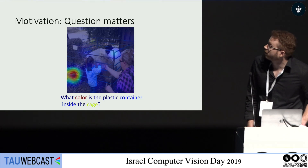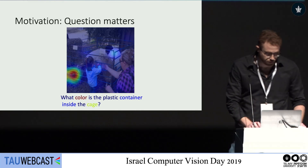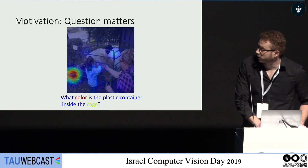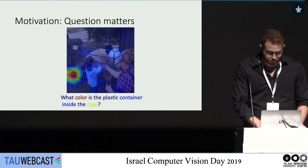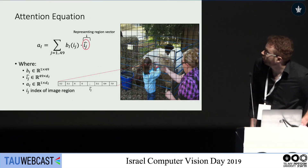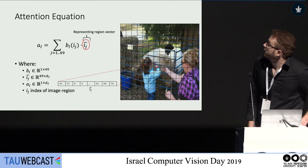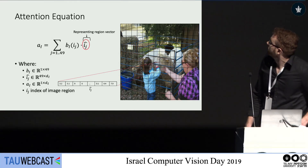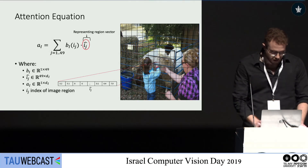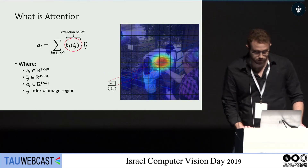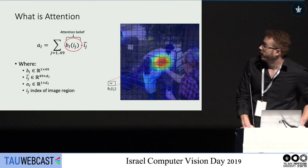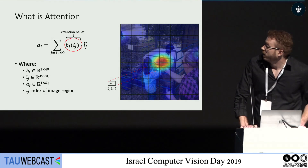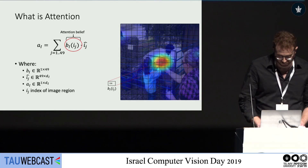Another motivation is the fact that the question matters. When we change the question, we want the attention over the image to change. So when the question is 'what color is the plastic container?', we want the attention to look at the plastic container. So let's define attention: the attention equation is actually a weighted sum. When we are given a representation for an image, we have several regions, each represented as a vector. What we want to do in attention is generate a belief of how important each region is. With this belief, we use a weighted sum to get the attended vector that represents all the important regions in the image.